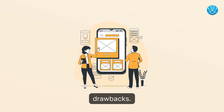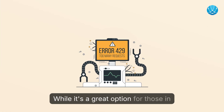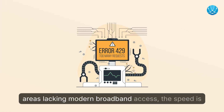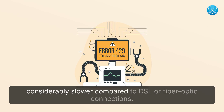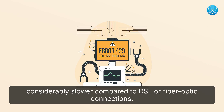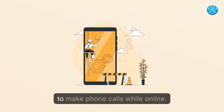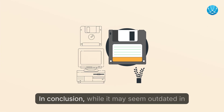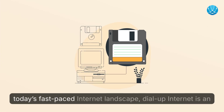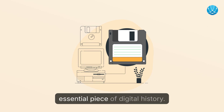Dial-up internet offers a simple and straightforward way to connect, but it is not without its drawbacks. While it's a great option for those in areas lacking modern broadband access, the speed is considerably slower compared to DSL or fiber optic connections. Additionally, due to the nature of dial-up, users can find it frustrating when they are unable to make phone calls while online.